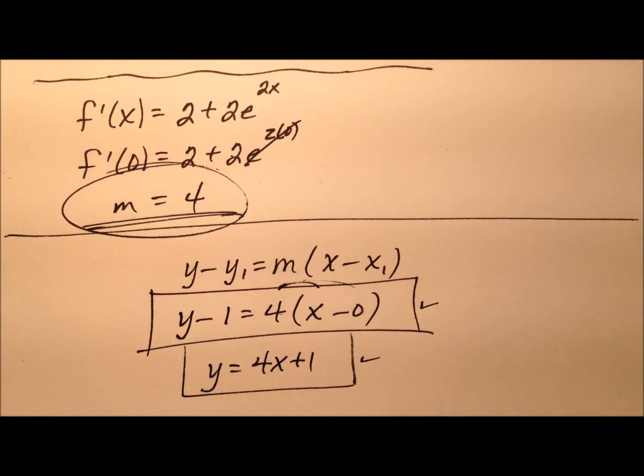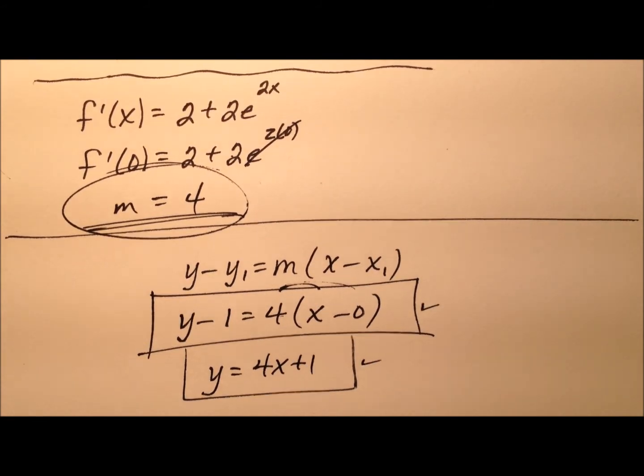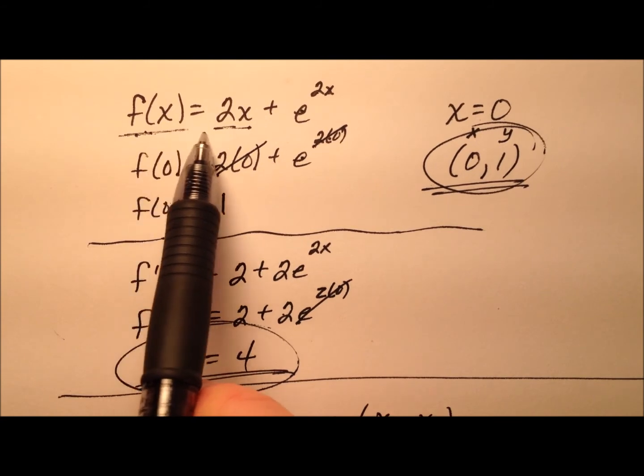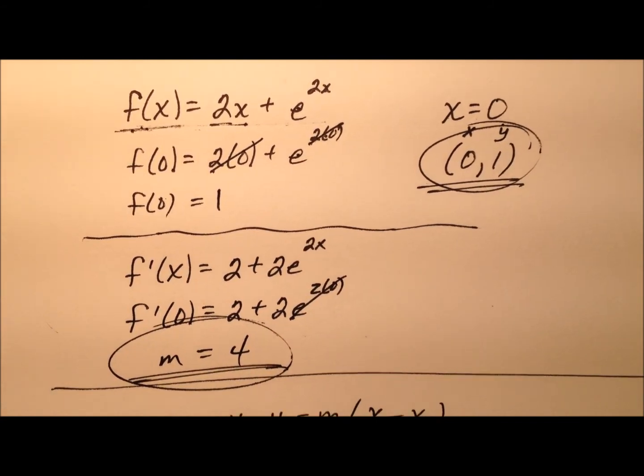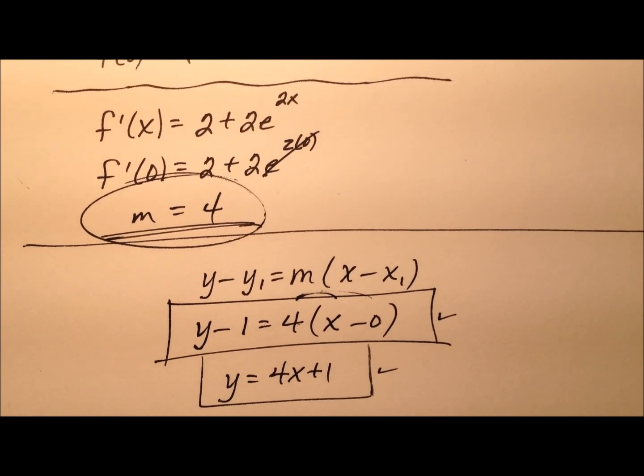Both of these equations describe the same line, which is tangent to the graph of this function at x equals 0. Let's look at the graph to see what that looks like.